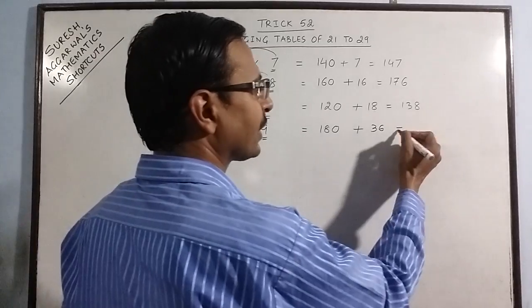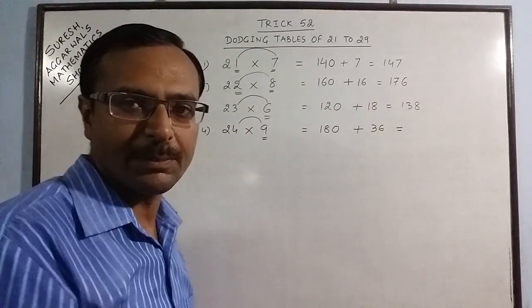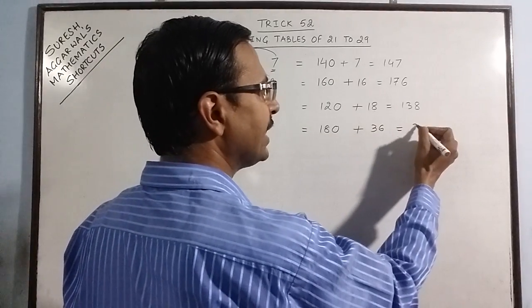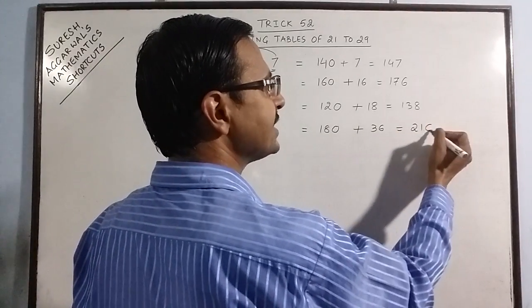Here also, if you have problem in adding these numbers, you can split this and add it comfortably. 180 plus 30 is 210, and 6 is 216.